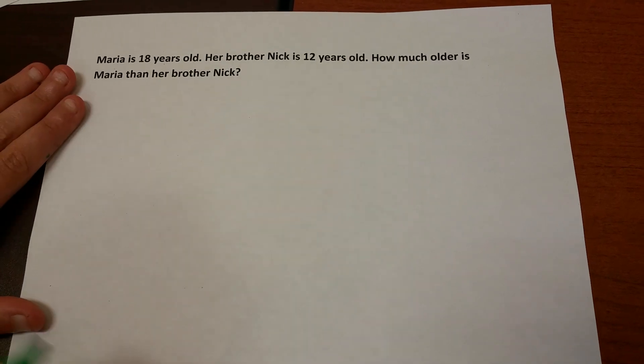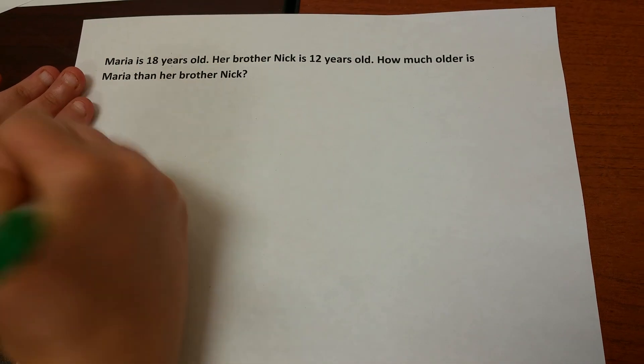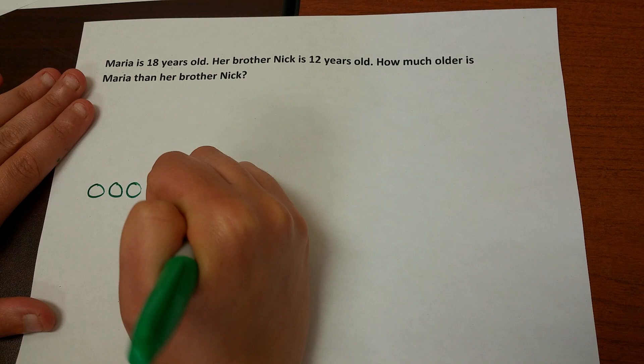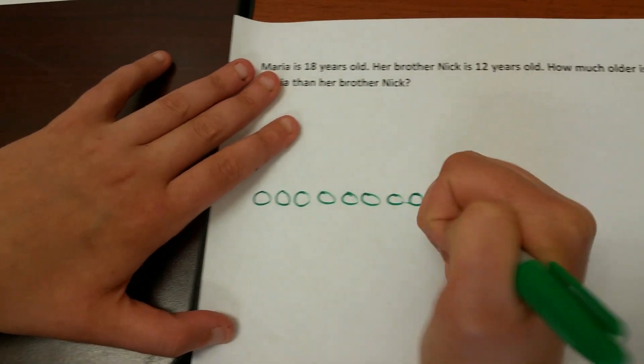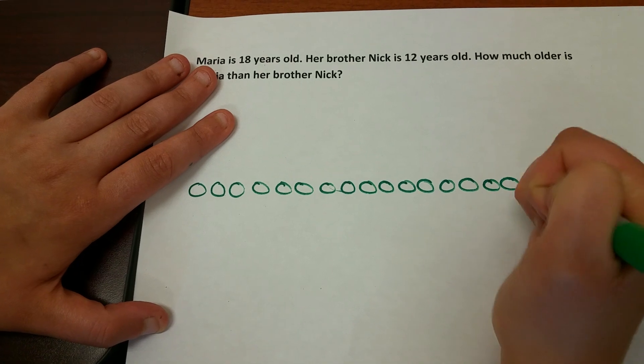If I wanted to do it with a single tape diagram, it's the same basic concept. I would start with the first number. Maria is 18. 1, 2, 3, 4, 5, 6, 7, 8, 9, 10, 11, 12, 13, 14, 15, 16, 17, 18.